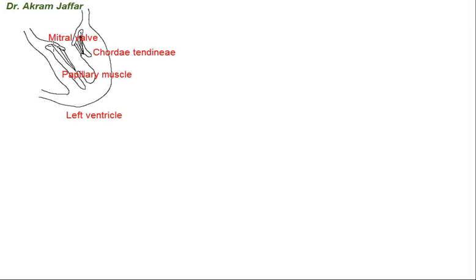This section shows the condition of the mitral valve — the left atrioventricular valve — during ventricular diastole. Blood passes from the left atrium into the left ventricle.